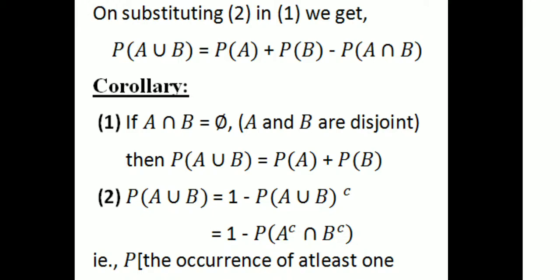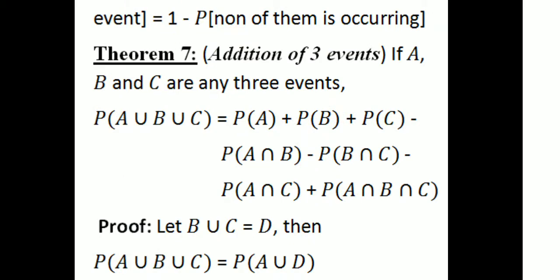The corollary: if A intersection B is phi, then probability of A union B equals probability of A plus probability of B. Also, using complementation with De Morgan's law, probability of A union B complement equals 1 minus probability of A union B. The probability of occurrence of at least one event equals 1 minus probability of none of them occurring.